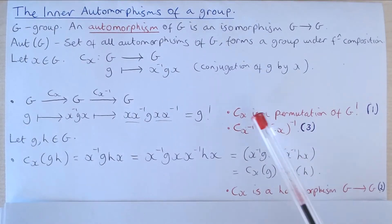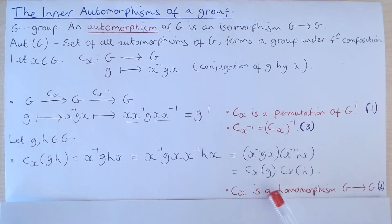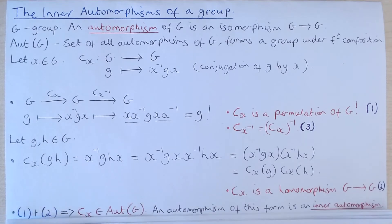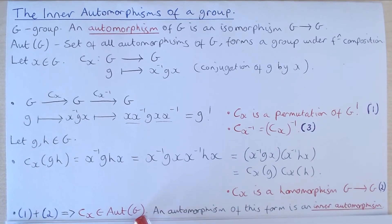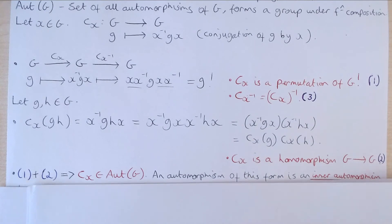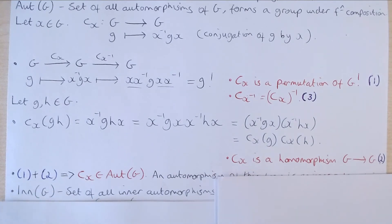So we have that CX is a permutation of G and CX is a homomorphism from G to itself. What this means is that CX is an automorphism of G and any automorphism of this form is called an inner automorphism. The set of all inner automorphisms of a group G is denoted by Inn(G).